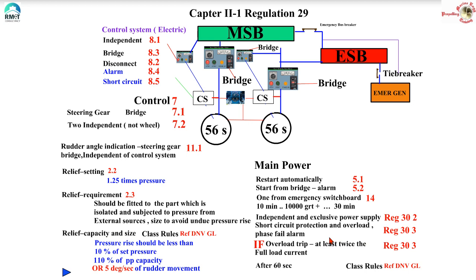If an overload trip is provided, it should not be the conventional one that trips at 110% overload. The steering gear motor overload should be minimum 200% — at least twice the full load current — with an extended time delay. SOLAS doesn't define the time delay, but class guidelines say after 60 seconds the overload trip can kick in. That is a big difference from, say, a sea water pump rated at 110% with a much shorter time lag. So let us not jump to the conclusion that a steering gear motor should never have an overload trip — that is not true.